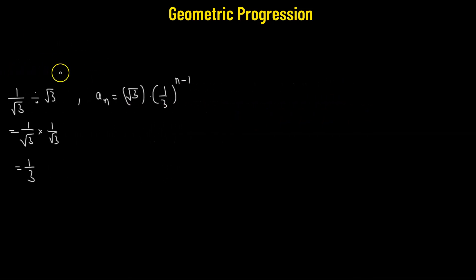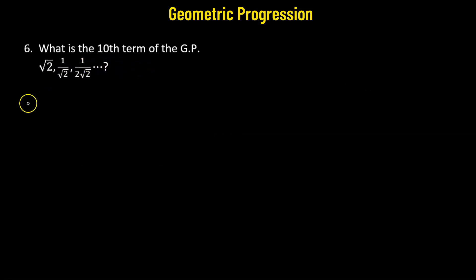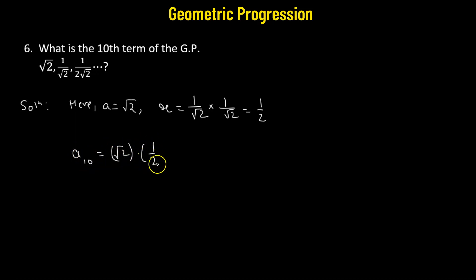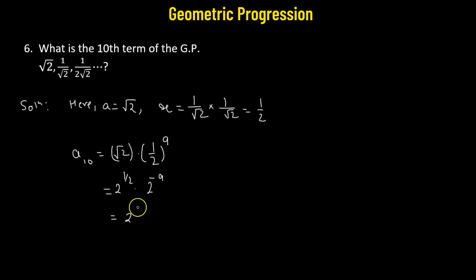Problem number six: we need to obtain the 10th term of the geometric progression. The first term is square root of 2. The common ratio is 1 over square root of 2 times the reciprocal of the first term, giving 1 over 2. The 10th term is square root of 2 multiplied by 1 over 2 raised to the power of 9, which equals 2 raised to the power of 1/2 times 2 raised to the power of negative 9, giving 2 raised to the power of negative 17 over 2.